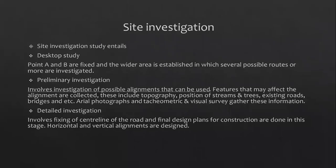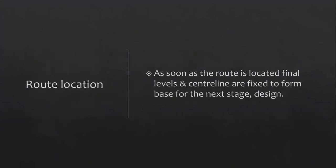Site investigation entails a desktop study where, for road construction, point A and point B are already fixed and you look at the wider area between them to establish possible routes. A preliminary investigation involves investigation of possible alignments that can be used, and then a detailed investigation is done on the center line you pick. As soon as a route is located, final levels and center lines are fixed to form the base for the next stage, which is design.